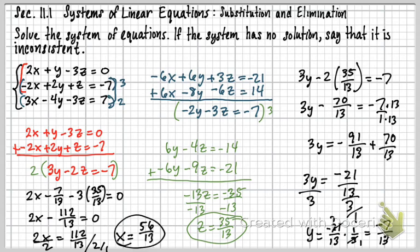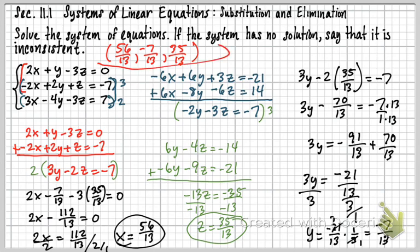Putting it all together, the solution is the 3-tuple: (56/13, -7/13, 35/13). This is what they call a 3-tuple — a point in 3-space with an x, a y, and a z. That's the answer.